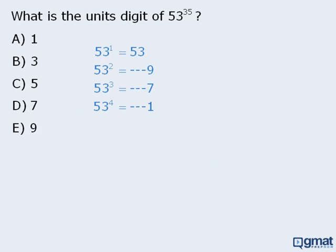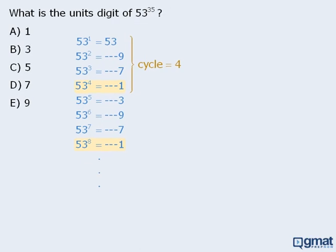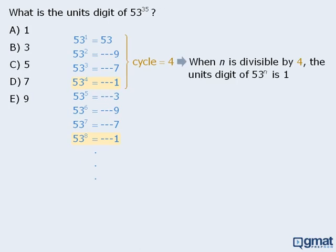When we continue with our calculations, we can see that the unit's digit of 53 to the power of 5 is 3, and at this point we can see that our pattern has begun to repeat itself. So the pattern here has a cycle of 4. The pattern of unit's digits is 3, then 9, then 7, then 1, and then it repeats. We can add a few more results to get a clearer picture. Since the cycle is 4, let's take a closer look at the powers of 53 where the exponents are divisible by 4. We can see that when the exponent n is divisible by 4, the unit's digit of 53 to the power of n is 1.